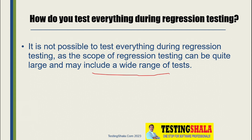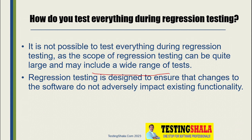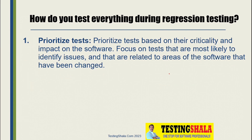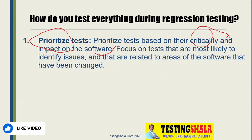It is really not possible to test each and every test case. So how will you ensure that as part of regression we are going to cover most of the test cases? The first aspect we should do is prioritize the test cases based on criticality and impact on the software. We should focus on the tests that are most likely to identify issues related to the area of the software that has been changed.